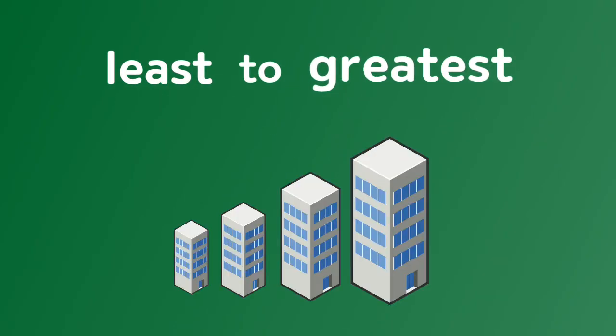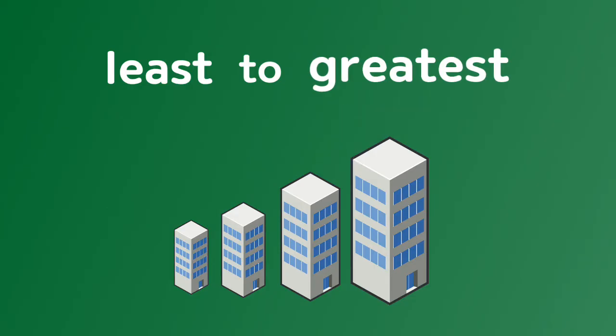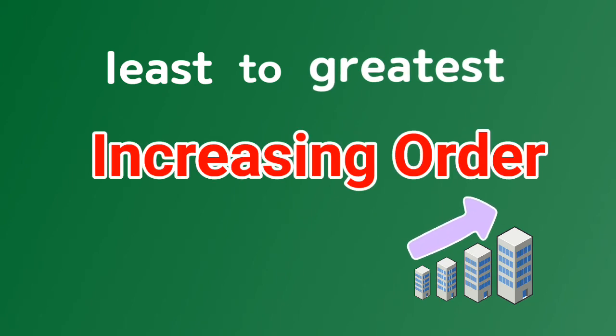Greatest to Least and Least to Greatest. Least to Greatest means from lowest to highest, or smallest to biggest. Least to Greatest is called increasing order.